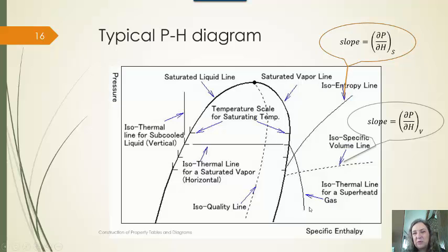An isotherm for superheated gas is going to typically start, go straight across at constant pressure during the two phase region, and then drop. We have lines with constant volume. We have lines with constant entropy. There can be many different lines. Any of these thermodynamic properties could be graphed.